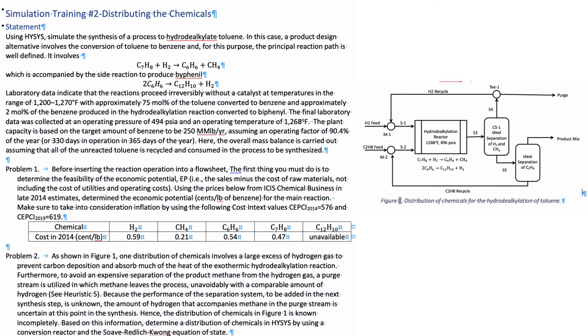In this particular example, we're going to be having two reactions. The principal reaction is the reaction of toluene with hydrogen to produce benzene and methane.